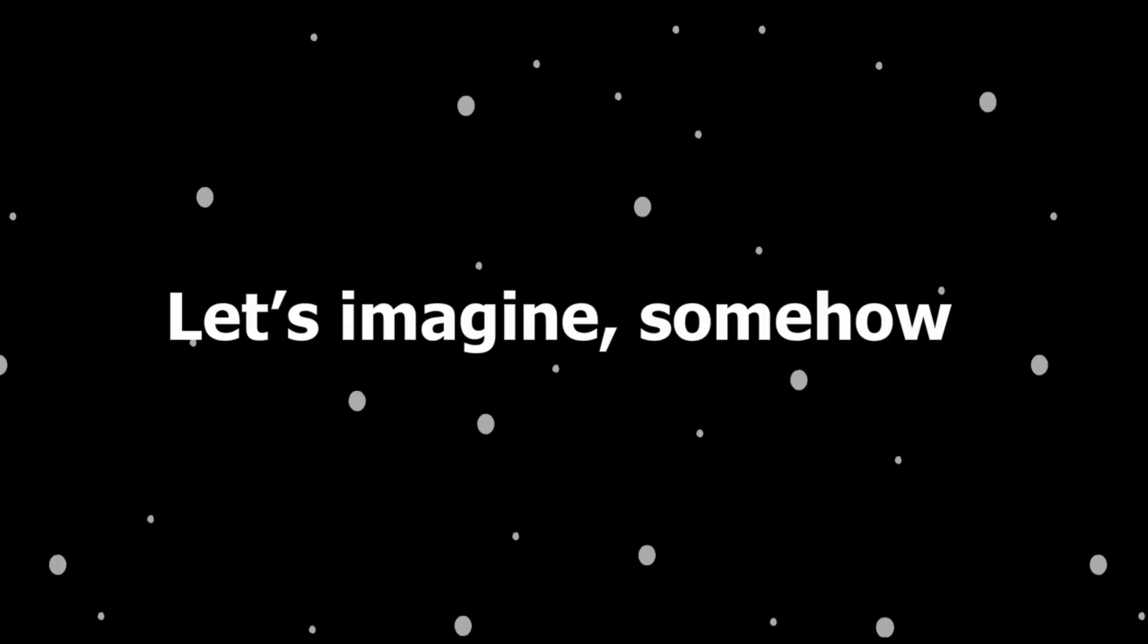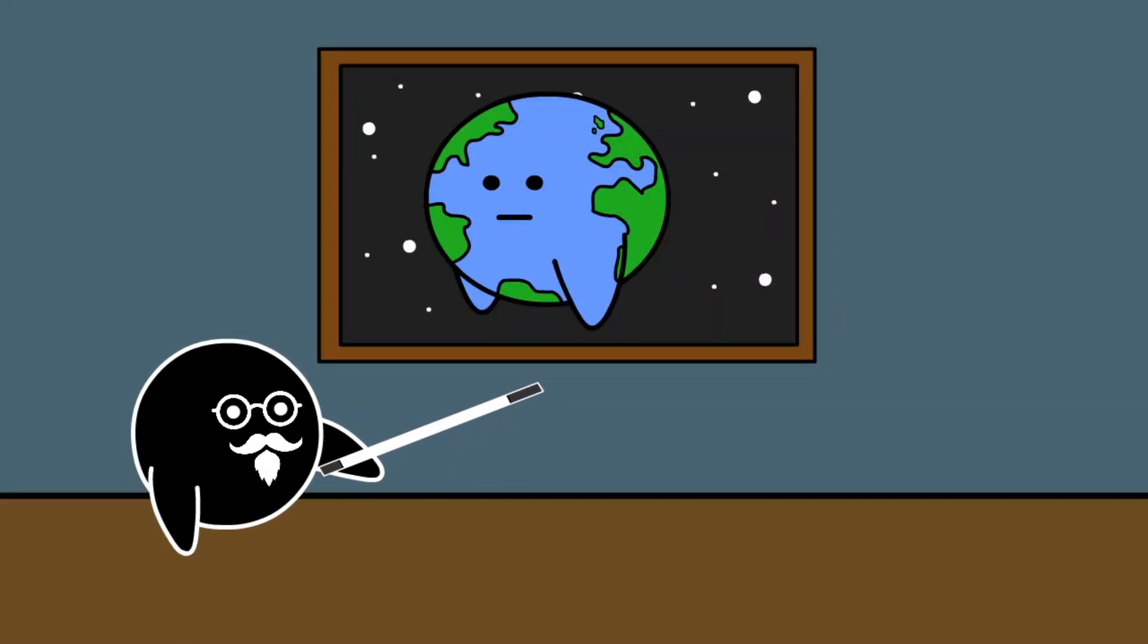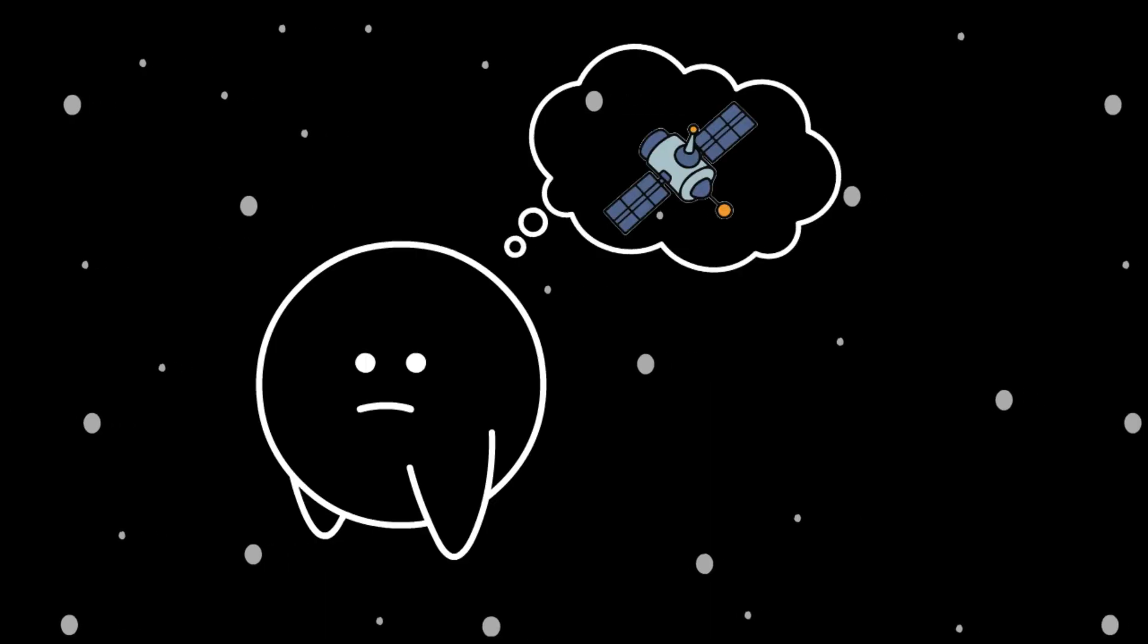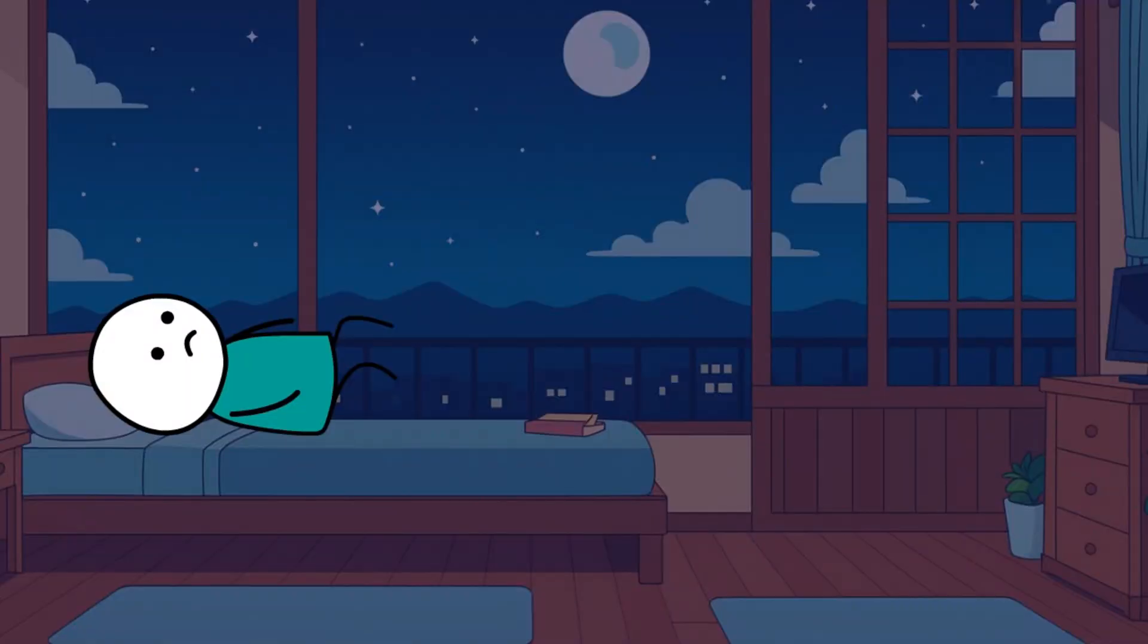Let's imagine somehow Earth doesn't get ripped apart immediately. Instead, it falls into orbit around the black hole, like a doomed satellite circling a cosmic drain. That's when the real nightmare begins.